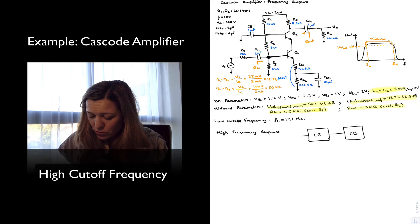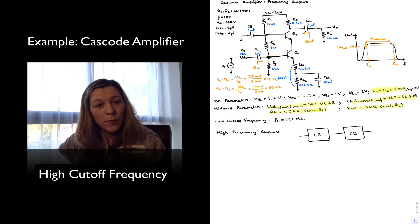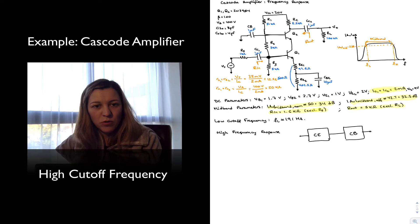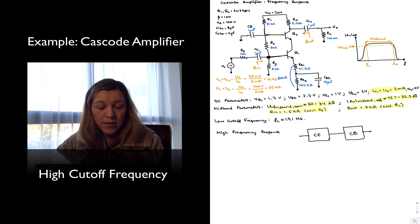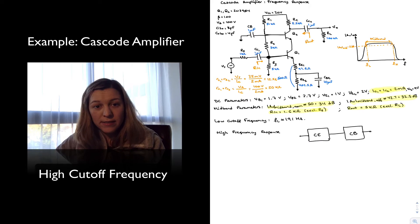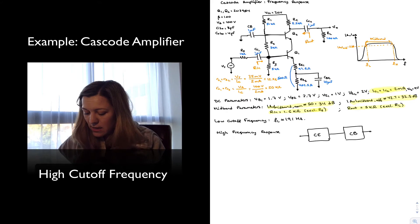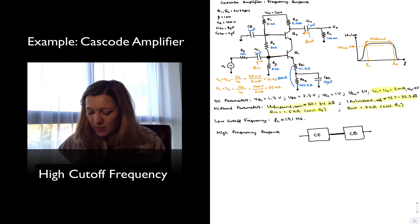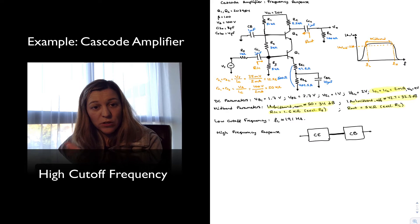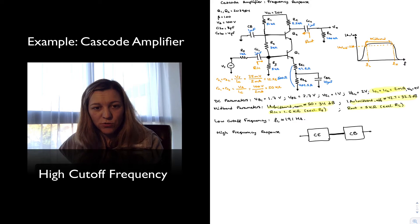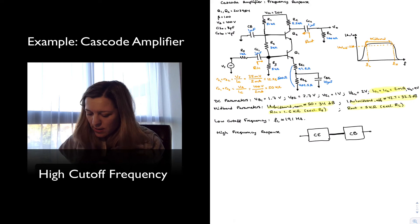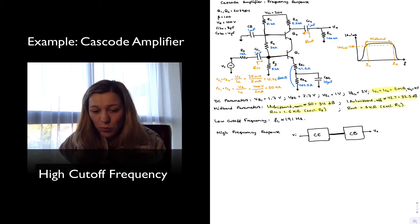We have two transistors, and each one of those transistors is going to have an input capacitance and an output capacitance associated with them. That gives us a total of four capacitances, except we're going to be able to lump the output capacitance of the common emitter amplifier with the input capacitance of the common base amplifier — so really three calculations. Here is where my input is applied, and here's where I take out my output.